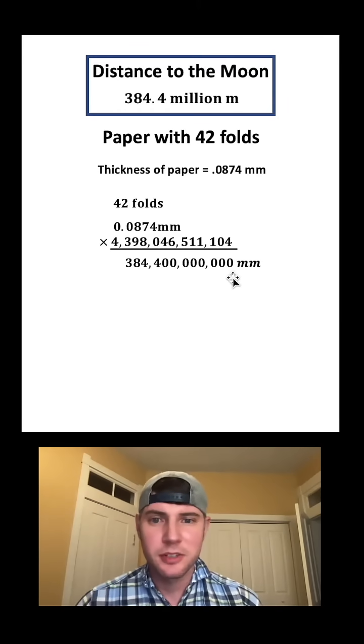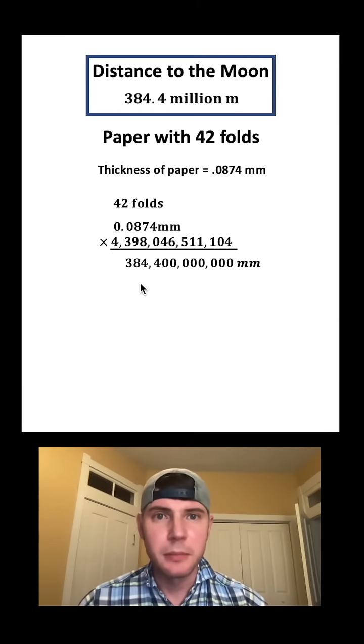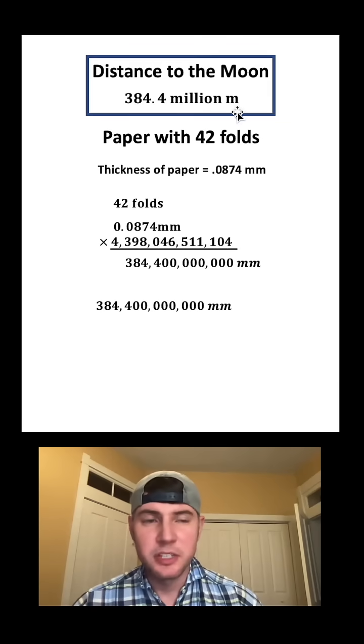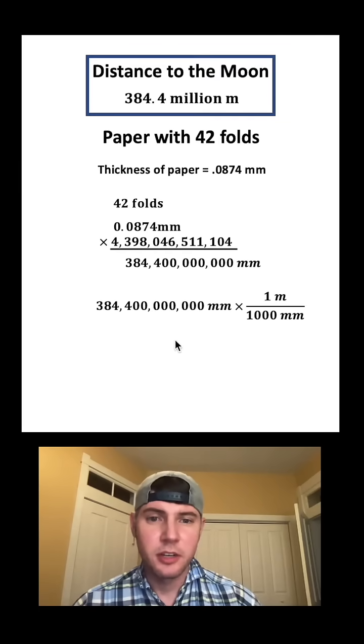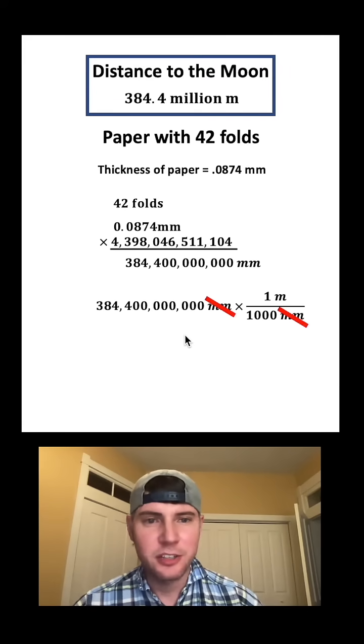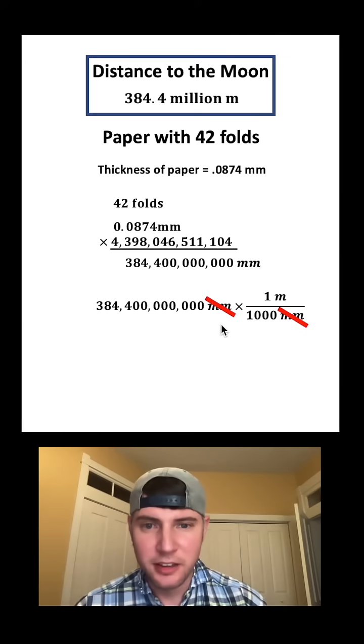So now we have 384 billion 400 million millimeters. So let's copy that down. And this was in meters, so let's convert this to meters. There's 1 meter for every 1,000 millimeters. When we multiply these, the millimeters cancel each other out, and we divide top and bottom by a thousand, which just gets rid of three zeros for both.